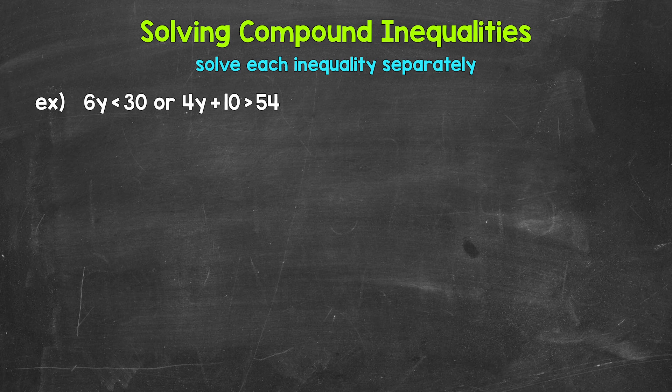Let's jump into our example where we have 6y is less than 30 or 4y plus 10 is greater than 54. Now when we solve a compound inequality involving OR, all we need to do is solve each inequality separately.